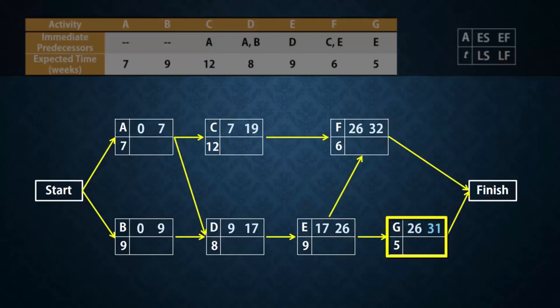Note that although G is the last letter, it doesn't have the highest earliest finish time because F has 32. So we say that the project's completion time is 32 weeks. In essence, the project's completion time is the highest of the earliest finish times at the finish node.